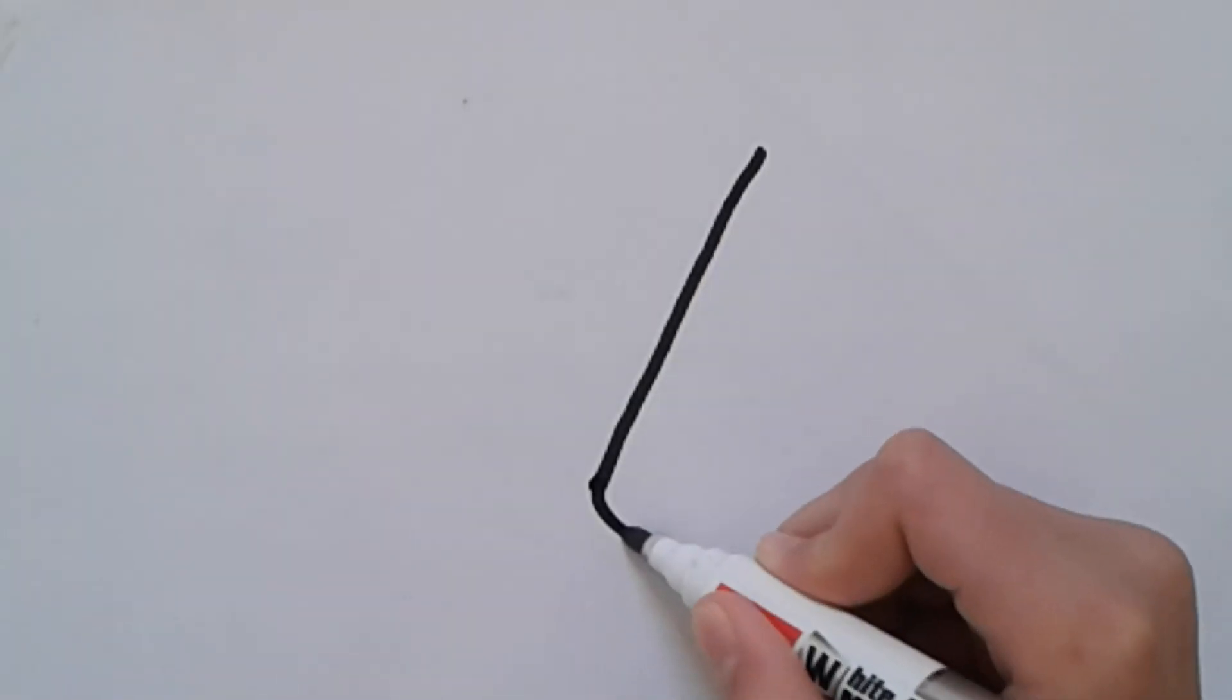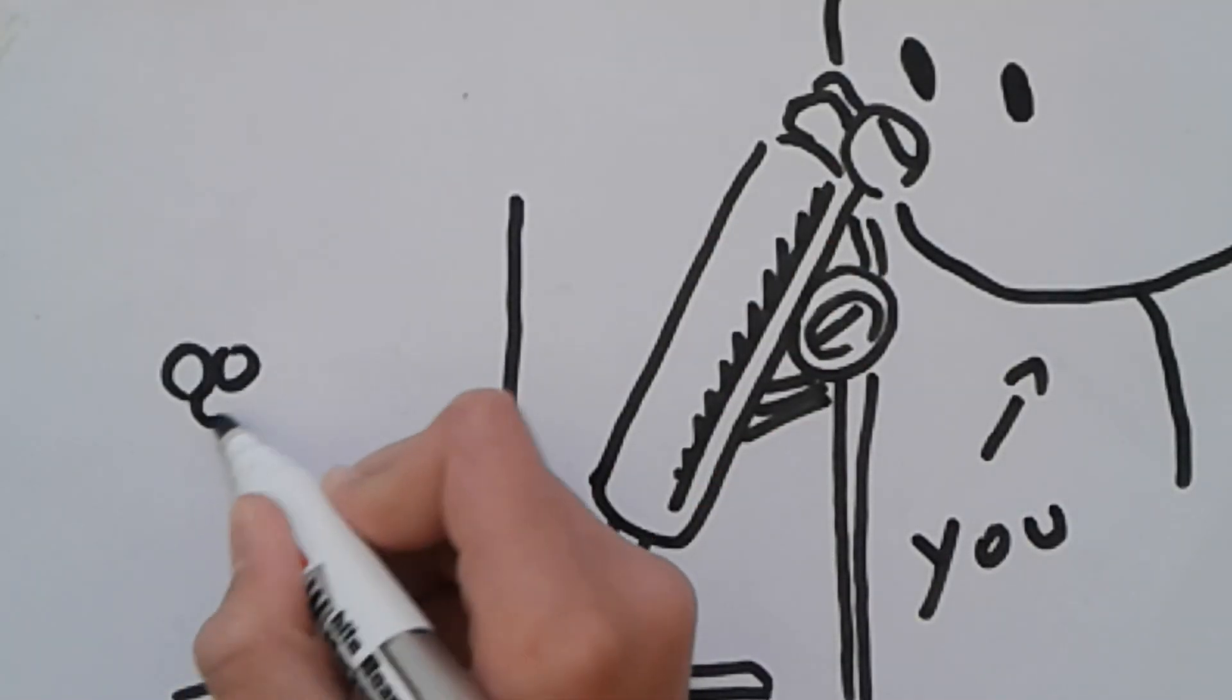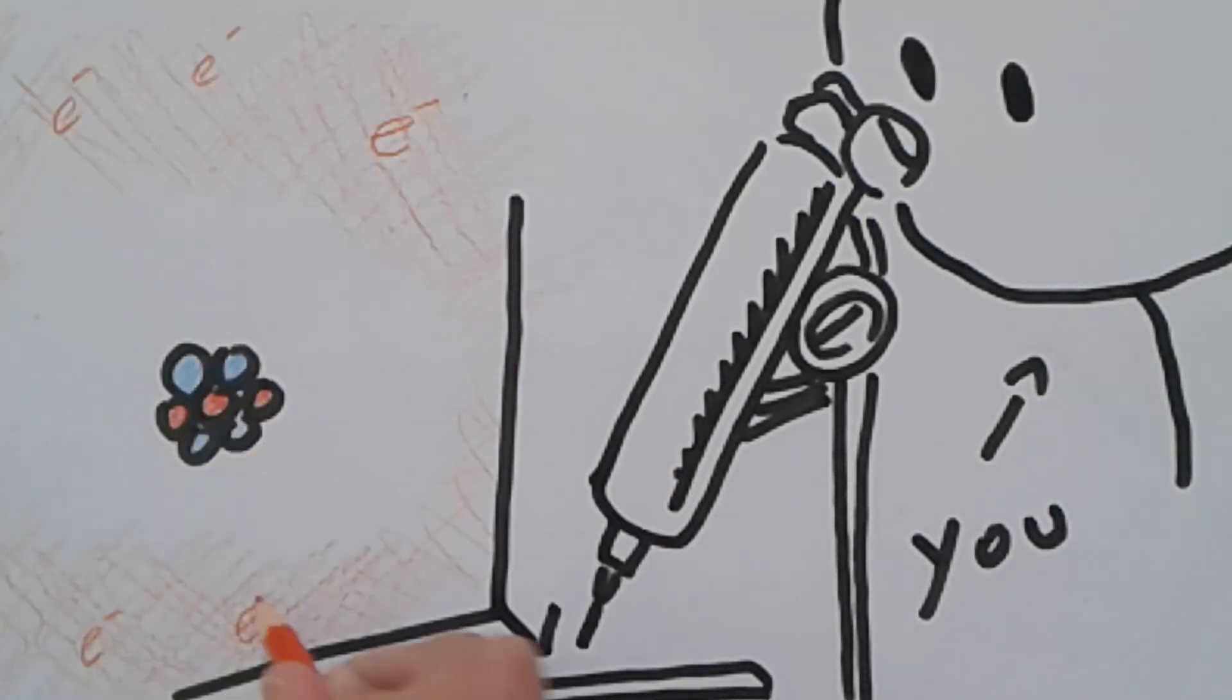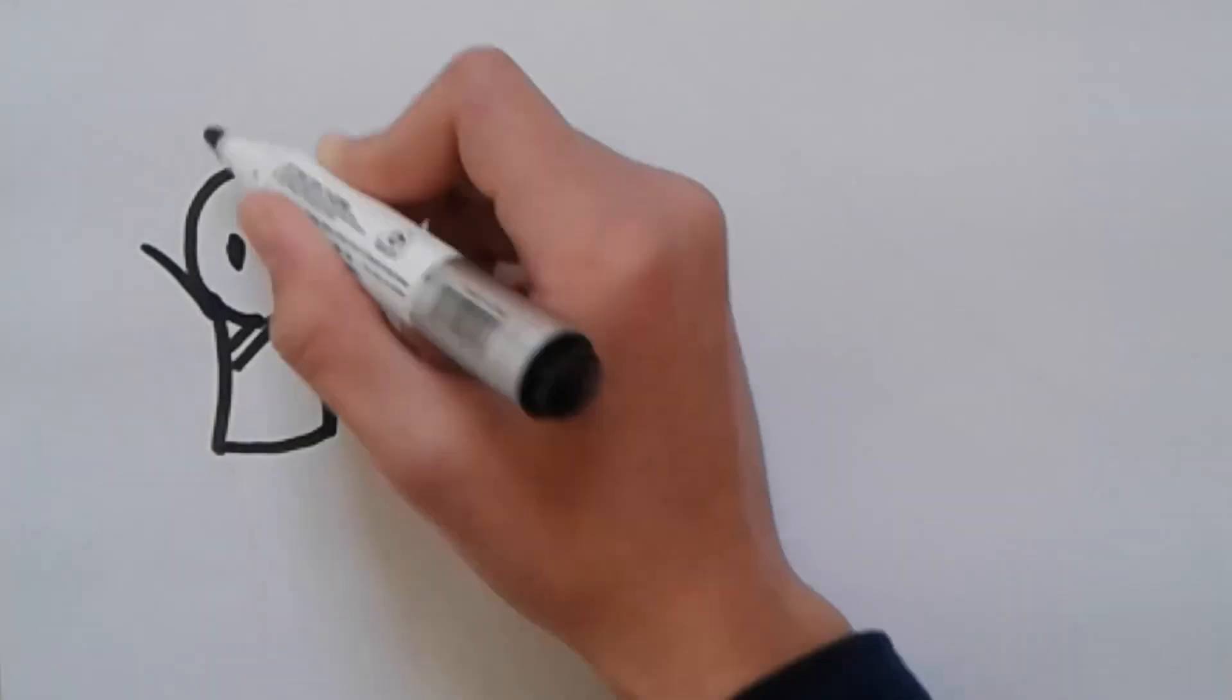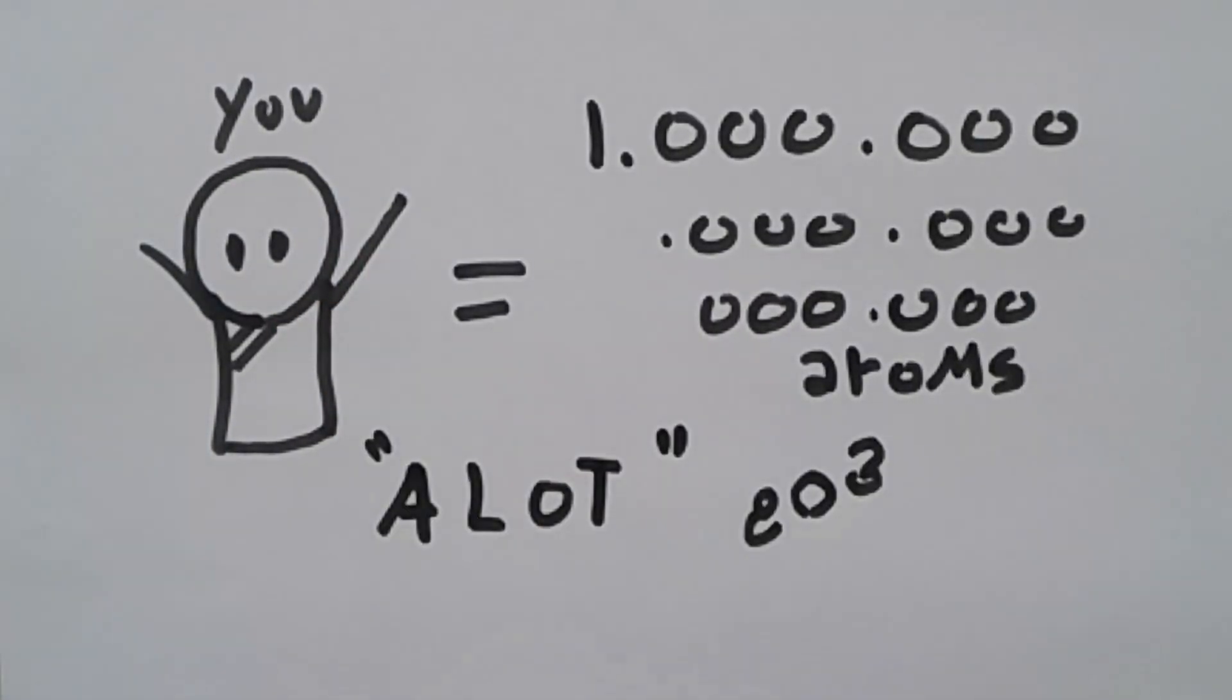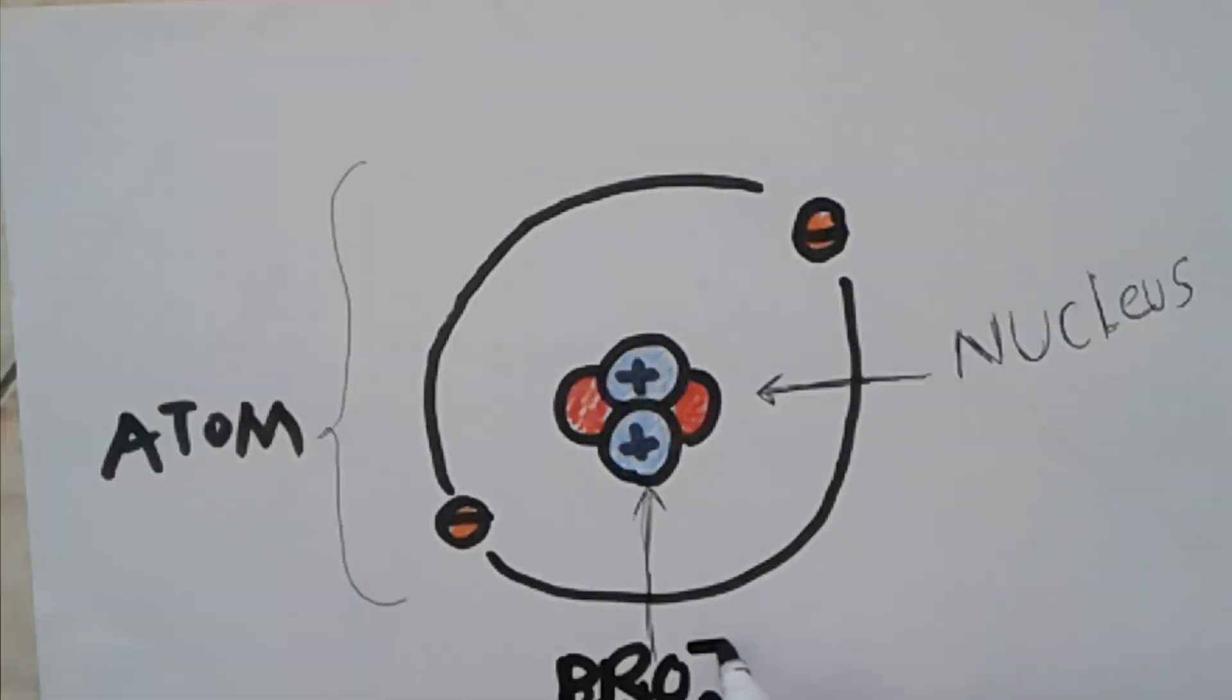Atoms, or atomos, which means indivisible in Greek, are the building blocks for everything in the universe. They are unbelievably small—you and I are made of billions of billions of atoms. Let's see its structure. Atoms consist of the nucleus, formed by protons and neutrons.